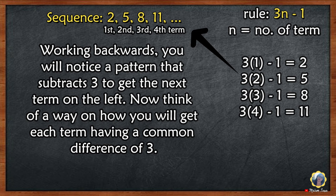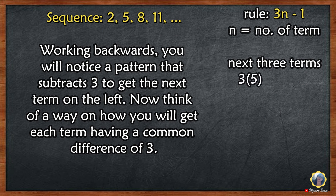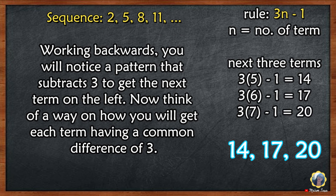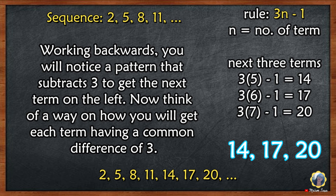Now get the next 3 terms. Change the value of n into 5, 6, and 7. 3 times 5 is 15, minus 1 is 14. 3 times 6 is 18, minus 1 is 17. 3 times 7 is 21, minus 1 is 20. So the next 3 terms for the sequence 2, 5, 8, 11 are 14, 17, and 20.